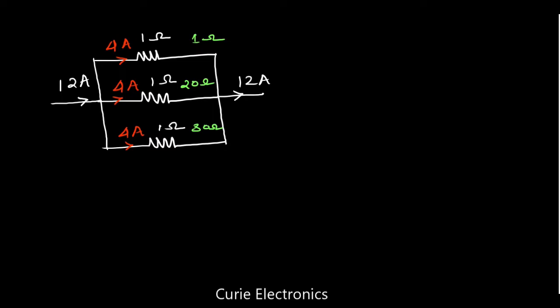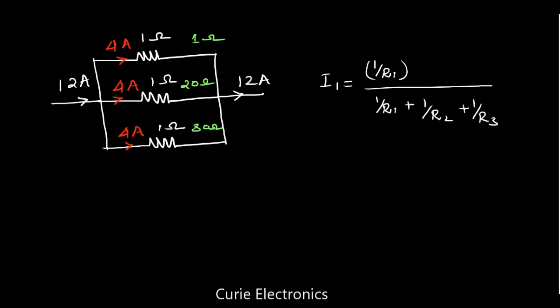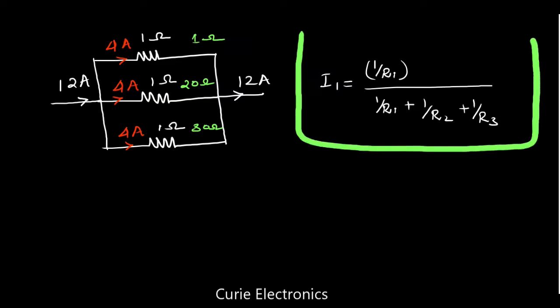For that, we have an equation. We have to use this equation: I1 equals 1 upon R1, divided by the sum of 1 upon R1 plus 1 upon R2 plus 1 upon R3. And we multiply the whole thing by the total current.